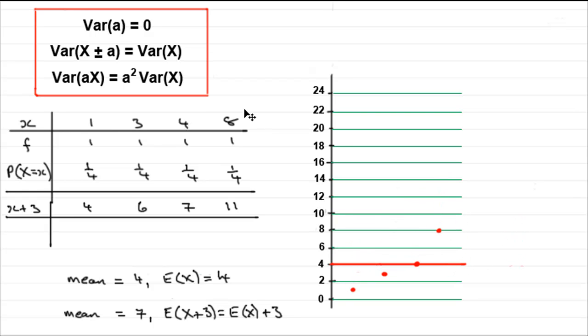So that's why we have this result here. That the variance of a random variable X, whether you plus or minus a constant, always remains at the same variance as it was before you added that constant. Okay?